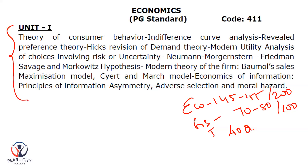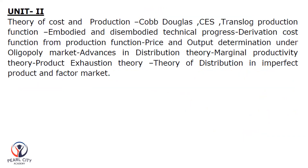The first unit is microeconomics — adverse selection and moral hazard. It is a little bit updated. George Ackerlof's theories — it is a little bit advanced. This is microeconomics, first unit. What we have done in the economics of the theory of cost and production — homogeneous production functions.